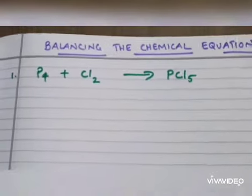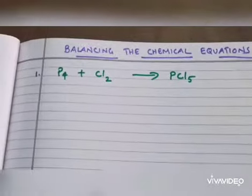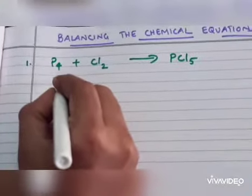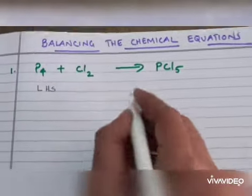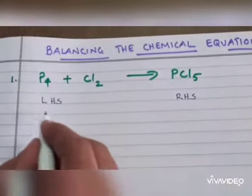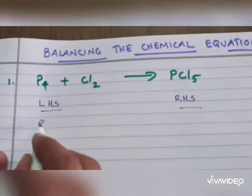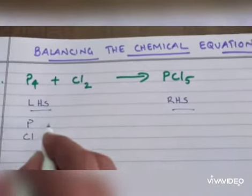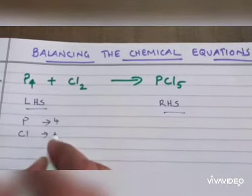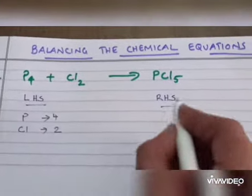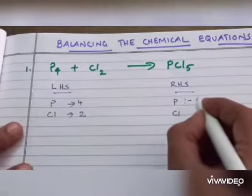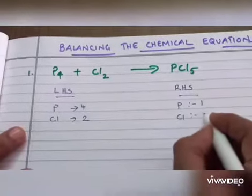as well as RHS. This is a skeletal equation, unbalanced equation. So first we have to write the number of atoms present on both sides, LHS as well as RHS. P, Cl. Then here P is equal to 4, Cl is equal to 2. In RHS side, P is equal to 1 and Cl is equal to 5.